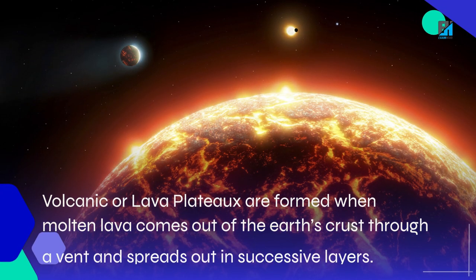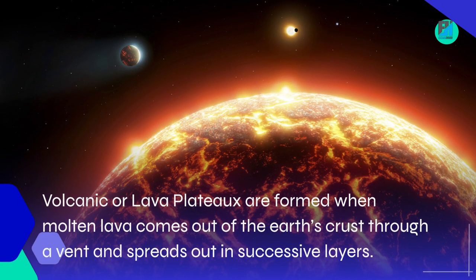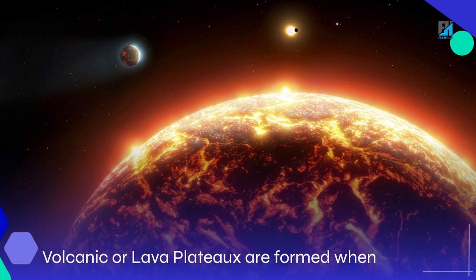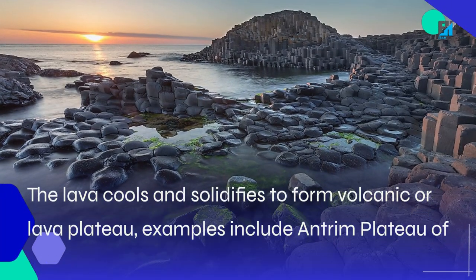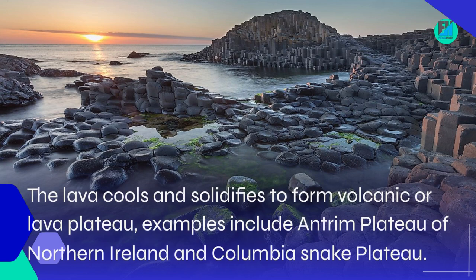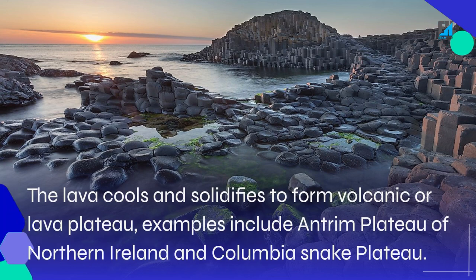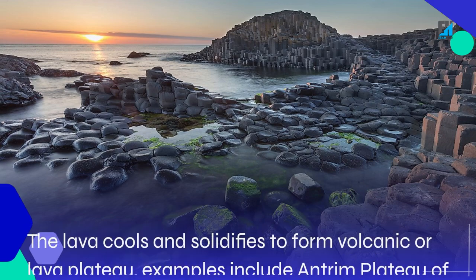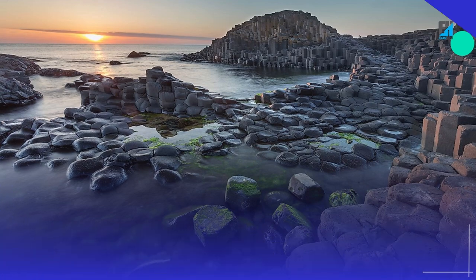Volcanic or lava plateaus are formed when molten lava comes out of the earth's crust through a vent and spreads out in successive layers. The lava cools and solidifies to form a volcanic or lava plateau. Examples include the Antrim Plateau of Northern Ireland and the Columbia-Snake Plateau.